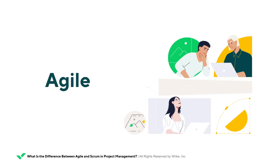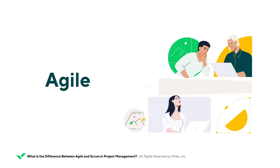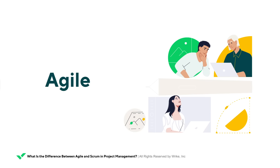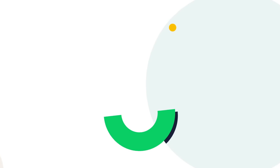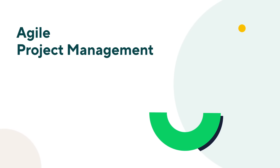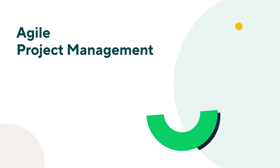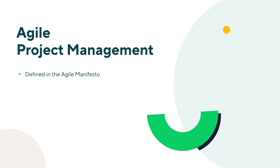Let's talk about Agile. Agile is one of the most popular project management methodologies, as it offers a more flexible approach than traditional linear methodologies, such as waterfall. Agile is based on a set of four values and twelve defining principles, set out in the Agile Manifesto, which was written in 2001.